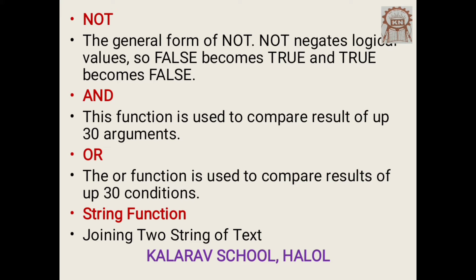AND function: this function is used to compare the result of up to 30 arguments. The result of the AND function is TRUE if all of the condition arguments result in TRUE as well. The general form is AND(condition1, condition2, ... to 30). The arguments of the AND function are conditions, each capable of resulting in either true or false.